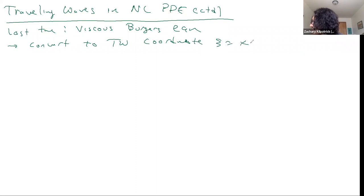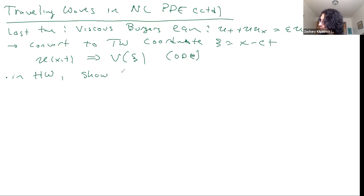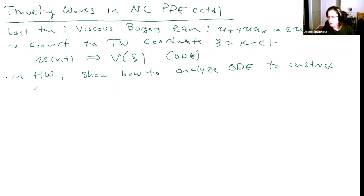The transformation ψ = x - ct turns this equation u_t + uu_x = εu_xx into an equation just for v of ψ, so we got an ODE in that case. In a homework problem, we'll show how to analyze the ODE to construct a traveling front solution.